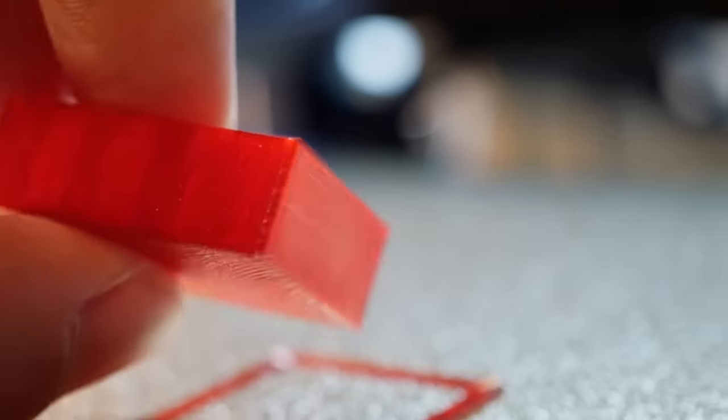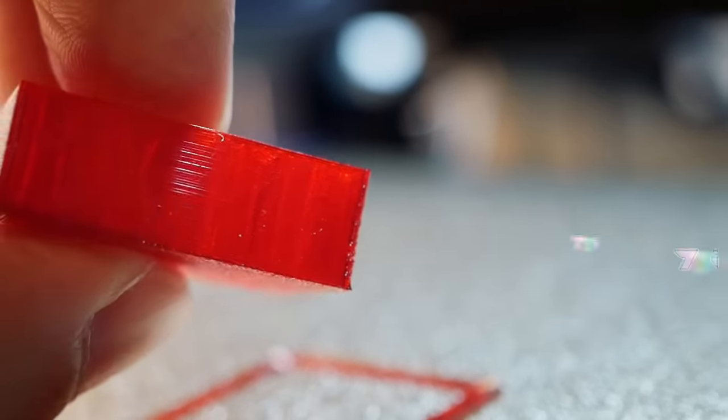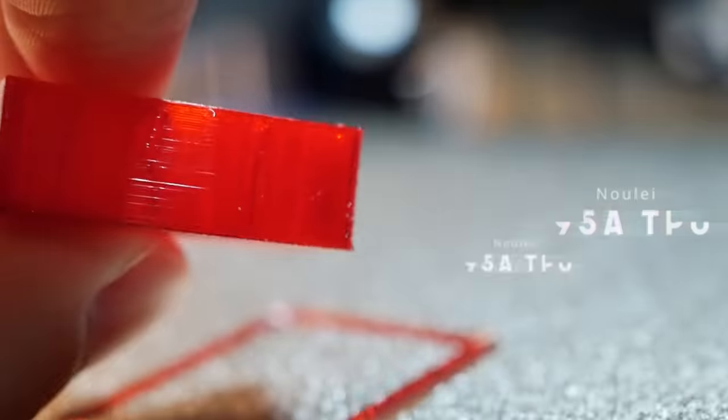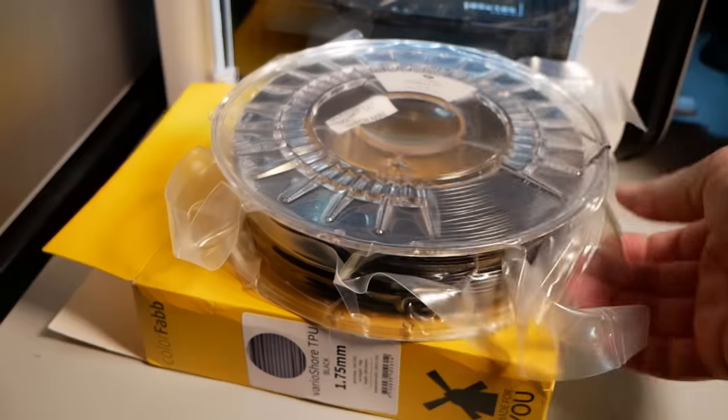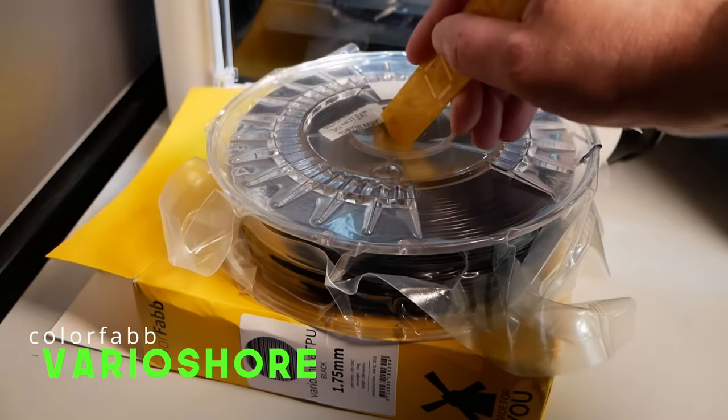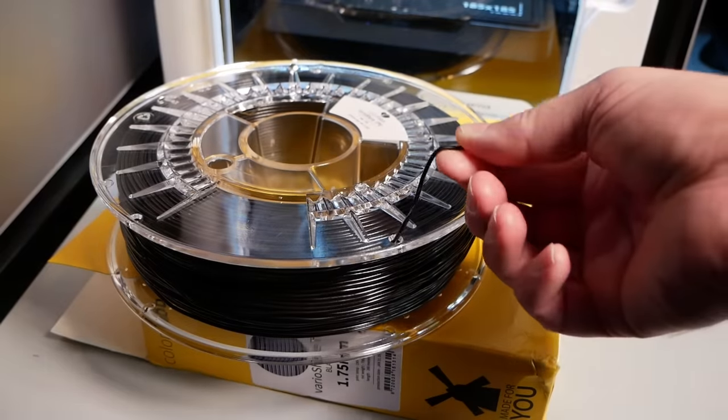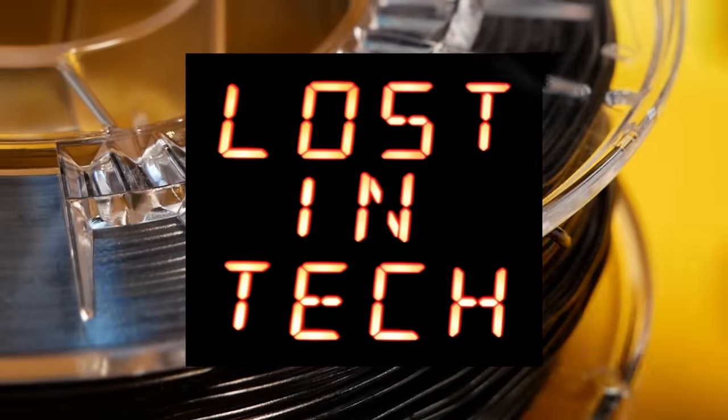What if you could get the same result but using a stiffer filament like this 95a from Nuuly? That is nonsense obviously, but here's a thing that claims it can do that. This is VarioShore from Colourfab, and I assure you it's not named ironically—I could only get black. Let's go.